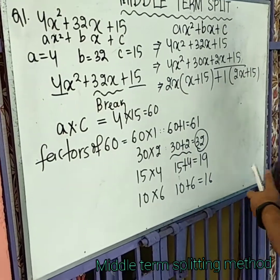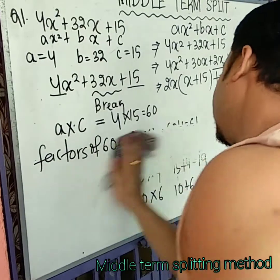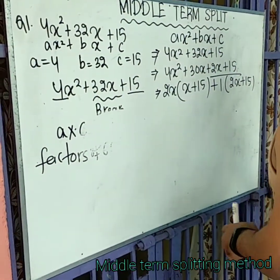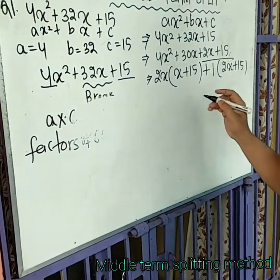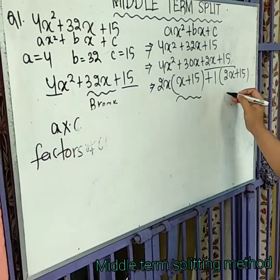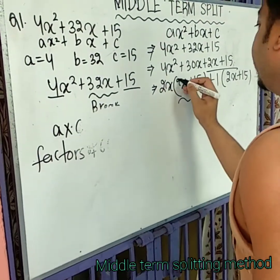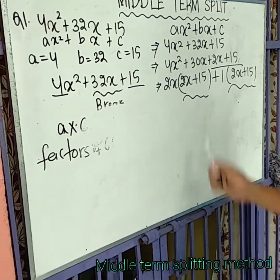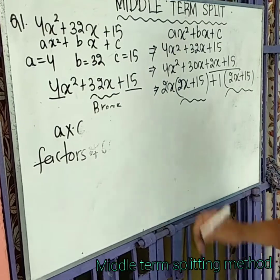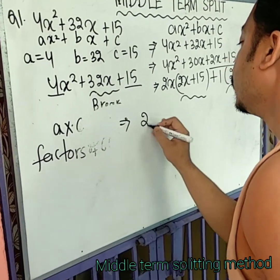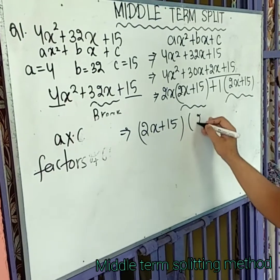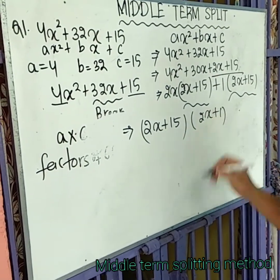Taking (2x plus 15) common, we get (2x plus 15) times (2x plus 1).